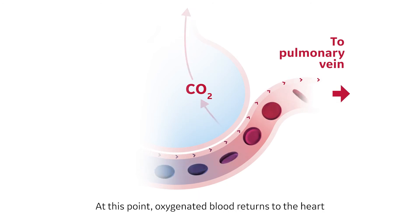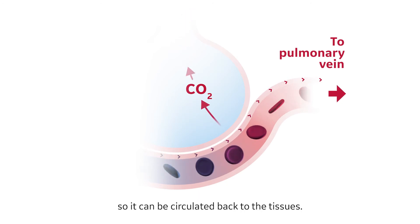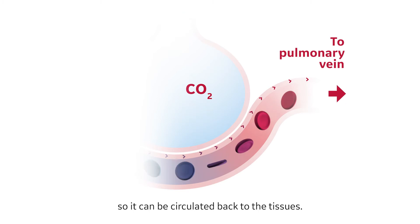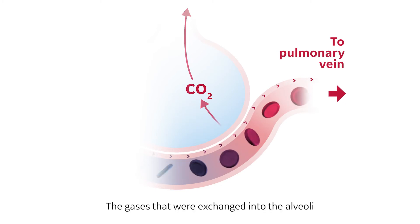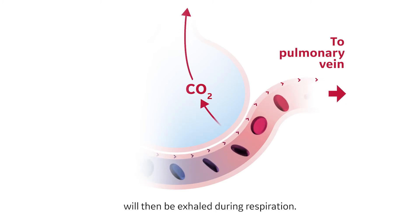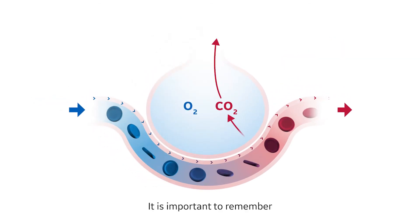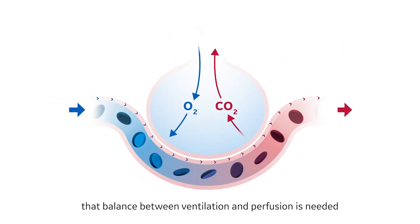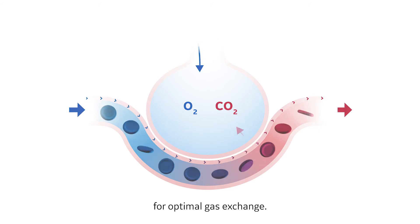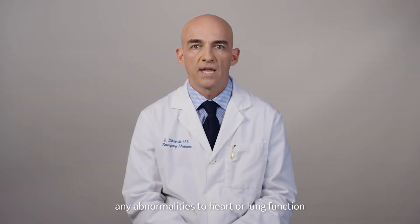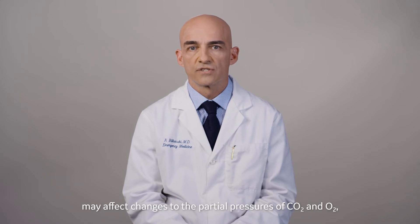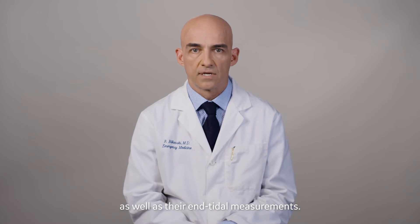At this point, oxygenated blood returns to the heart so it can be circulated back to the tissues. The gases that were exchanged in the alveoli will then be exhaled during respiration. It is important to remember that balance between ventilation and perfusion is needed for optimal gas exchange. In addition, any abnormalities to heart or lung function may affect changes of the partial pressures of CO2 and O2, as well as their end tidal measurements.